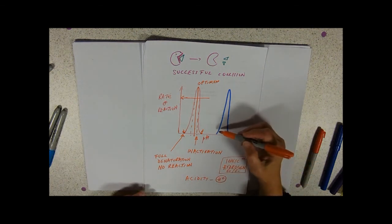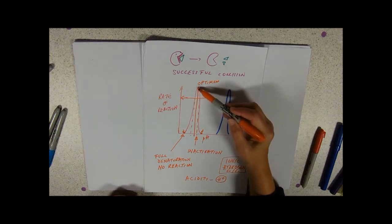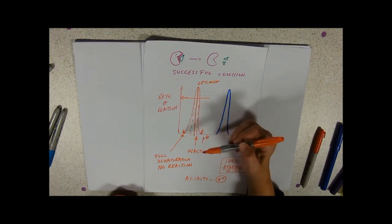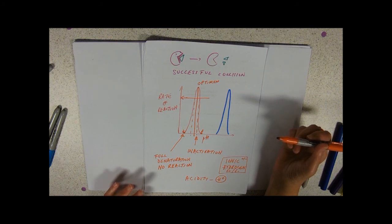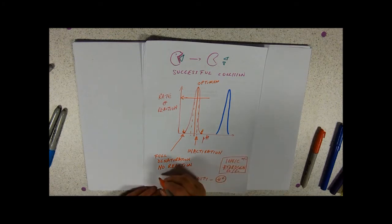So pH, nice narrow graph, optimum in the middle. Either side, we've got inactivation of varying degrees. Only when we get to the bottom of the graph do we get that full denaturation, where the ionic and hydrogen bonds have been so severely disrupted that we've got this change in the active site again.